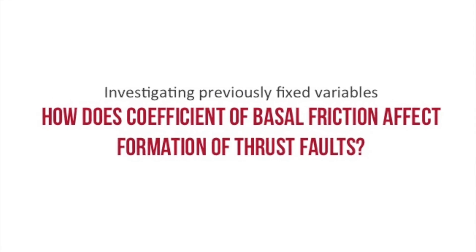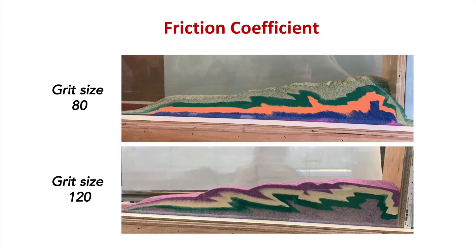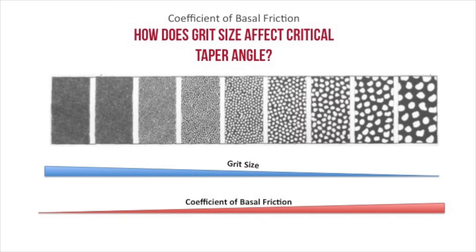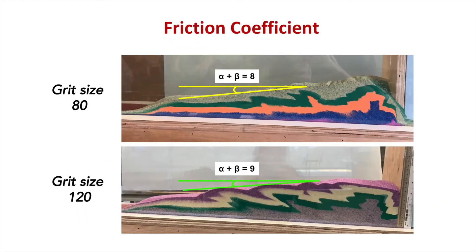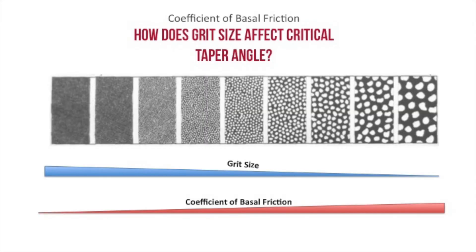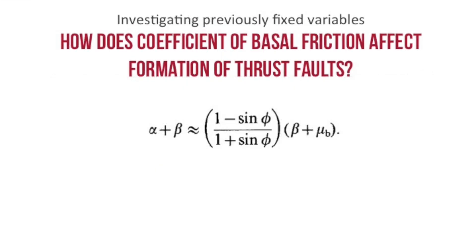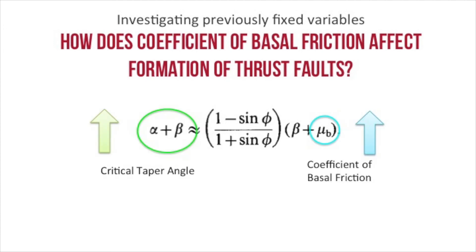We also determined the effect of the coefficient of basal friction by comparing our results to an experiment conducted with a larger coefficient of basal friction, keeping all other variables constant. A smaller grid size of 80 has coarser grains than a larger grid size of 120. From our observations, a larger grid size produced a larger critical taper angle of the wedge, leading us to conclude that the larger grid size corresponds to a smaller coefficient of basal friction. The relation between critical taper and coefficient of basal friction is shown by the equation, which confirms that critical taper increases with the coefficient of basal friction.